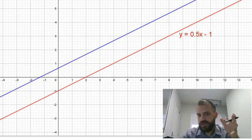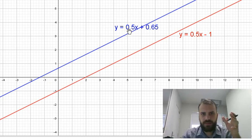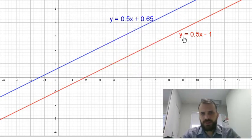Let's see what the equation of that line is. So you can see the equation of this line is y equals 0.5x minus 1 and the equation of this line is y equals 0.5x plus 0.65. Let's just move it around a little bit.